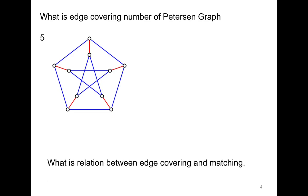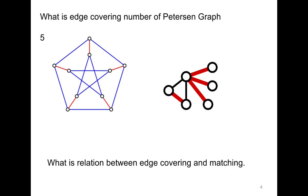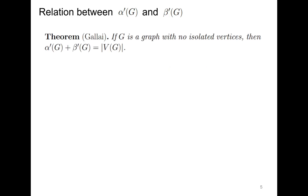The next question is: what is the relation between the edge covering number and the matching number? Before making a conclusion, consider one more example where the edge covering number is 4 but the matching number is 2. From these two examples, we can say that the sum of the edge covering number and the matching number is equal to n.